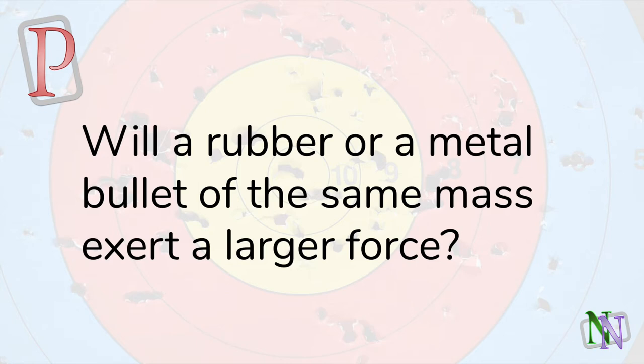We start with a puzzle. Imagine two bullets with the same momentum, but one is made of rubber and bounces off the target, while the metal one enters the target and comes to a stop. Which exerts the larger force on the target? The solution will be given near the end of the video.